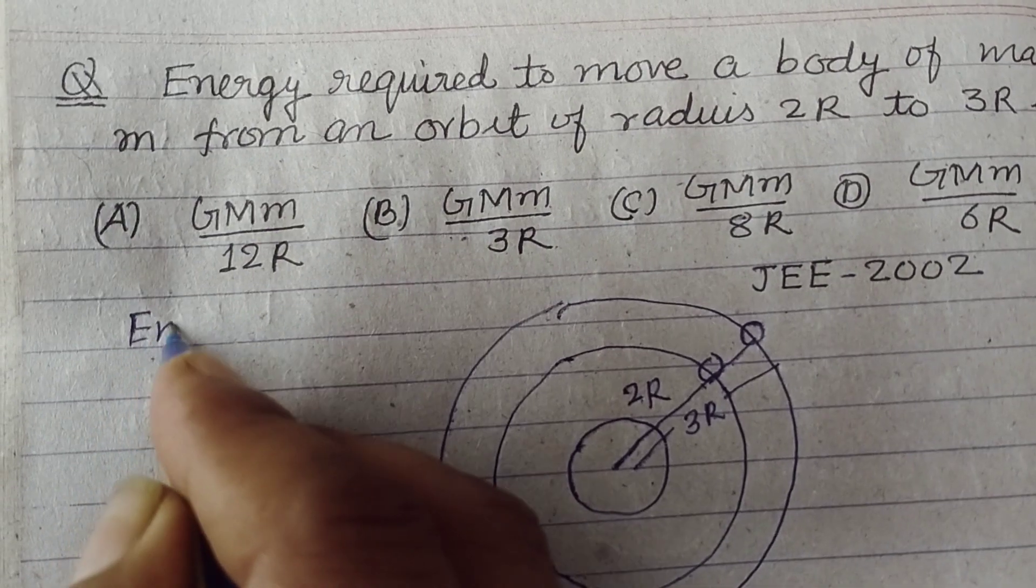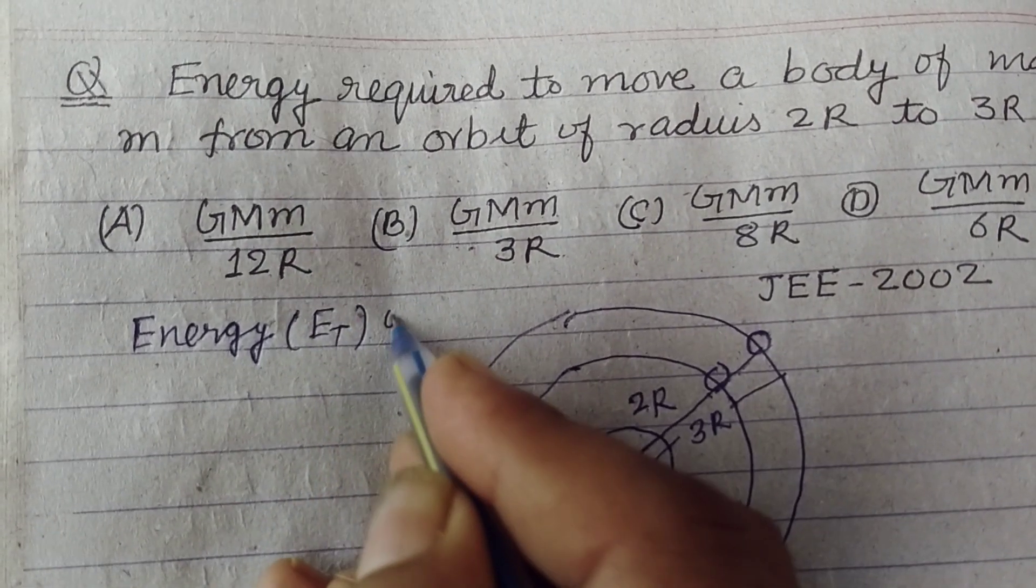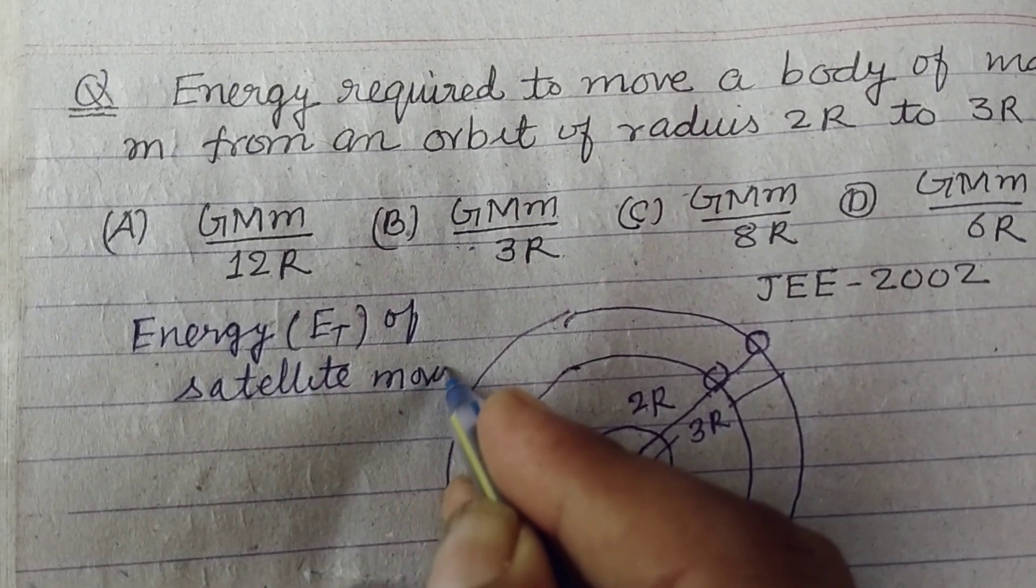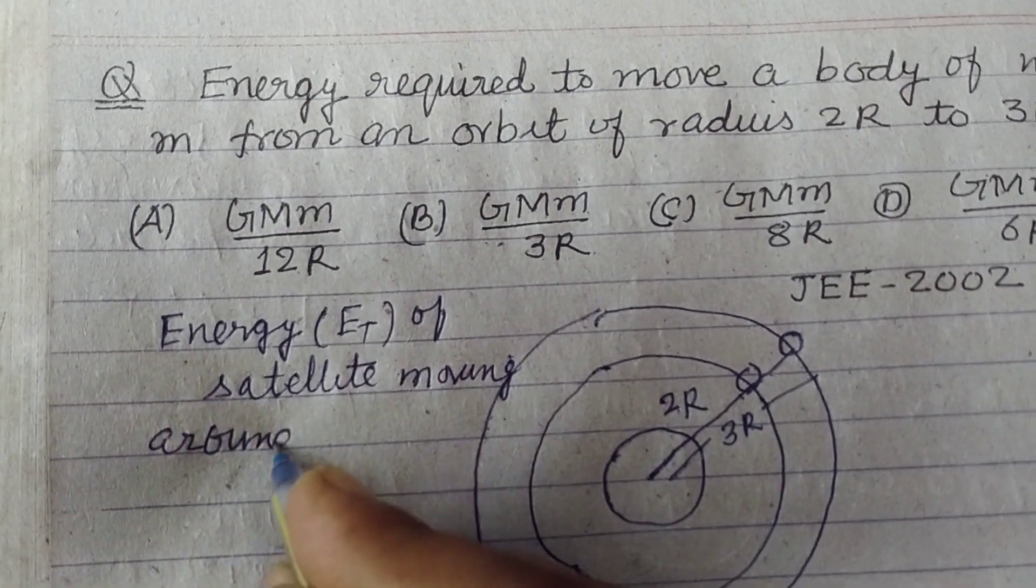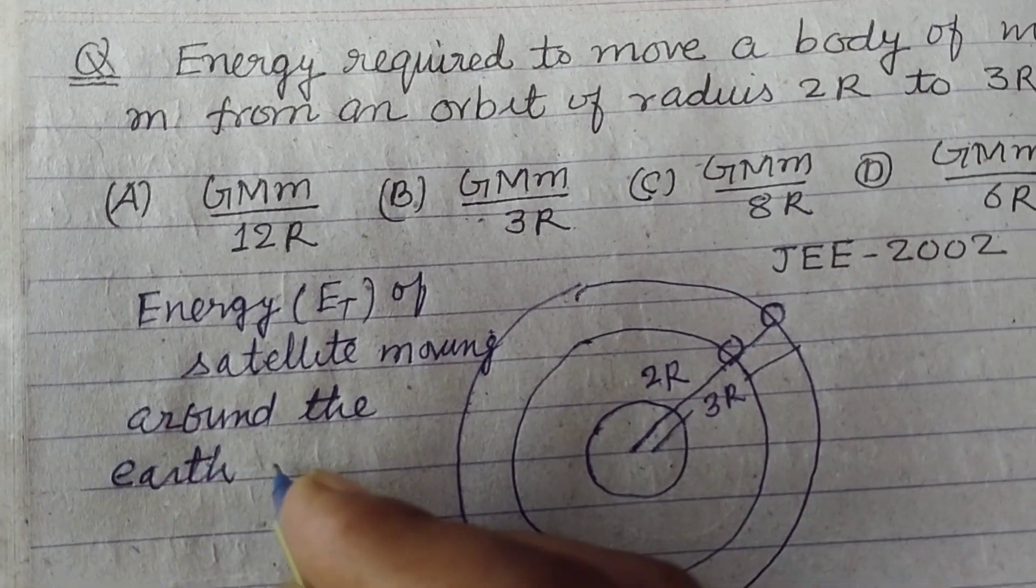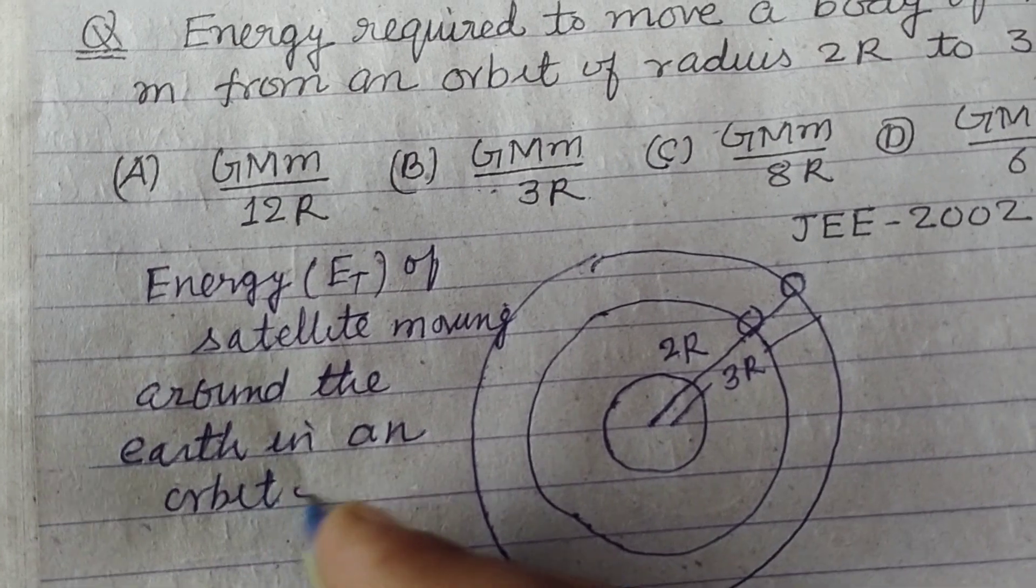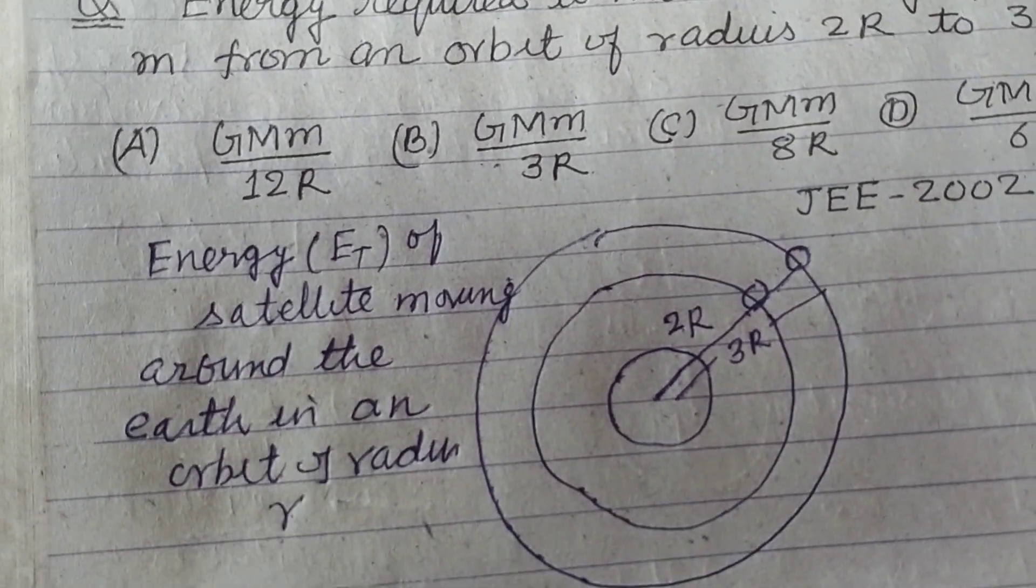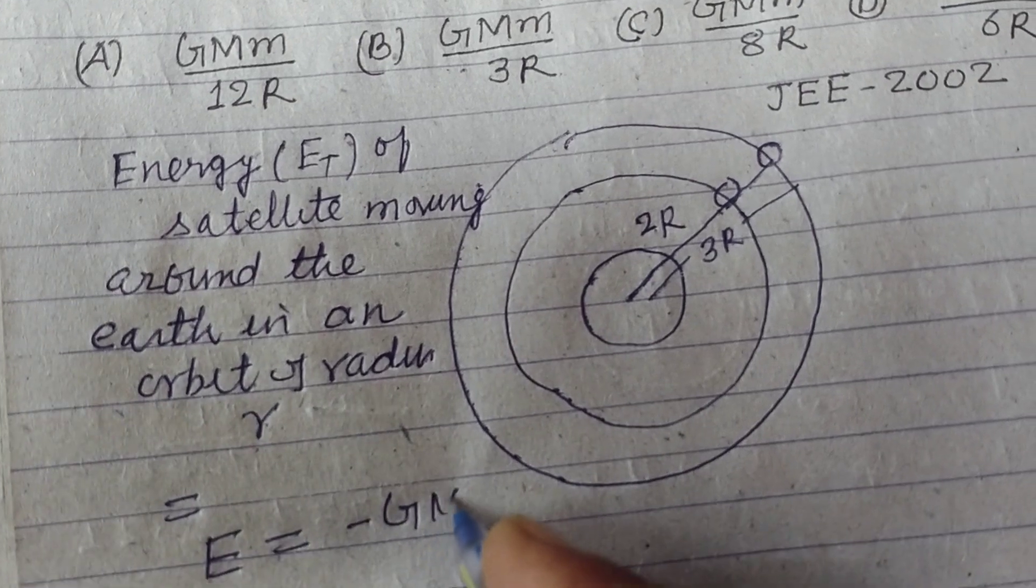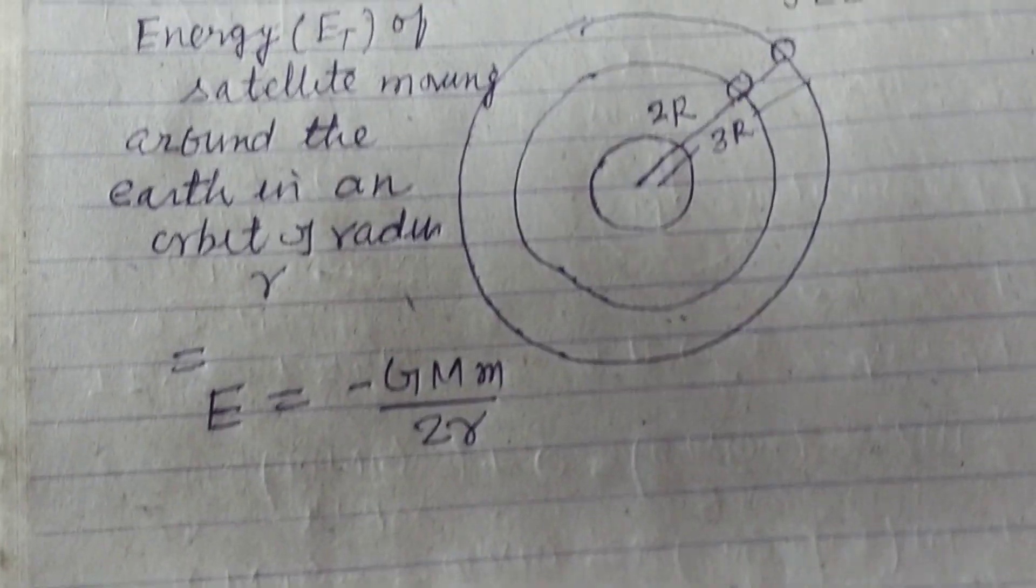So energy, or we can say total energy of satellite moving around the Earth in an orbit of radius R, is equal to E equal to minus GMm upon 2R. So this is the formula of total energy.